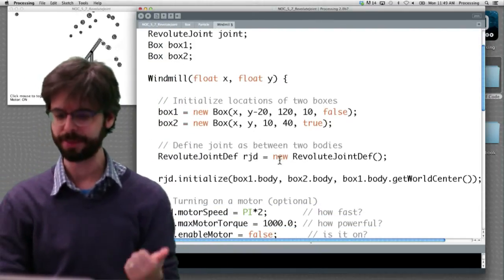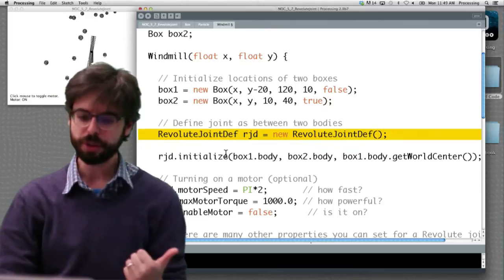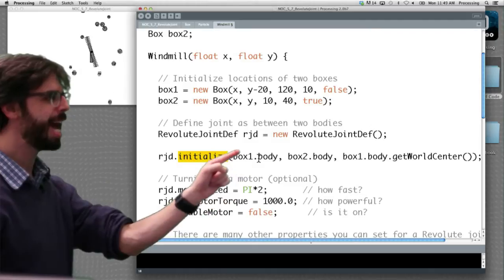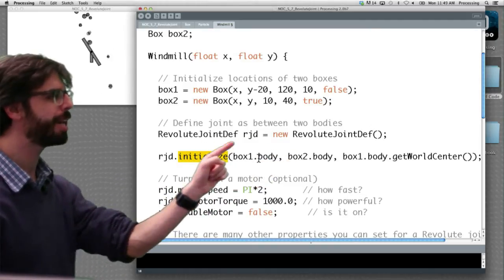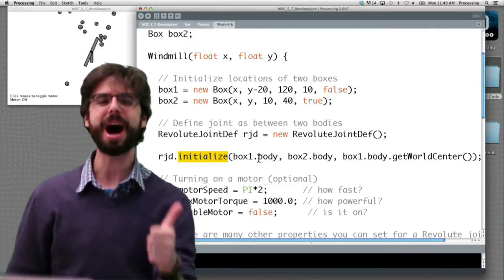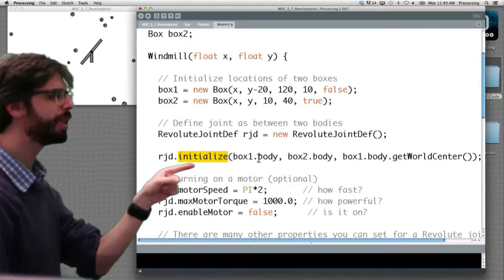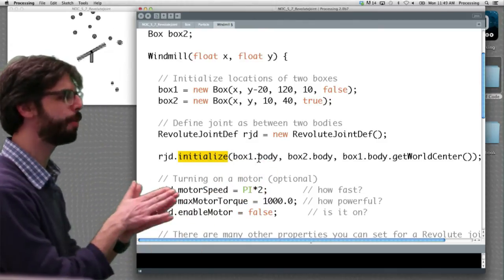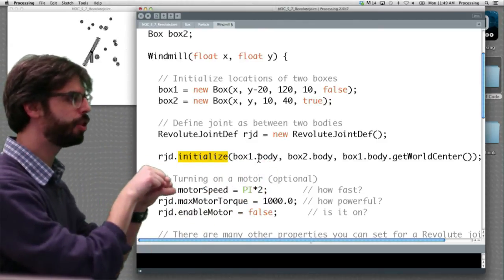So if we look here, we've got these steps again. Define the joint. Revolute joint has a nice function called initialize where we say, hey, here's the joint. This body and the, it's going to connect box one body, box two's body, and then here's the anchor point. The anchor point is at box one's center. So that's really key to see in the initialize function, the third argument is the anchor point, which is the point where the two are connected to each other.